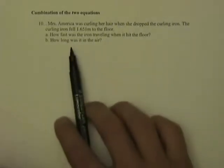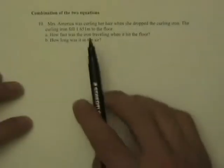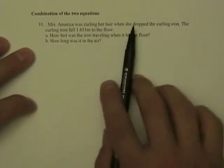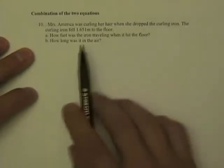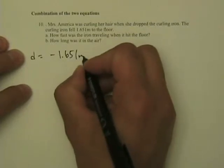Okay this is where we're gonna combine the equations. So let's see, Miss America is curling her hair when she drops a curling iron. The curling iron falls minus 1.651 of a meter.